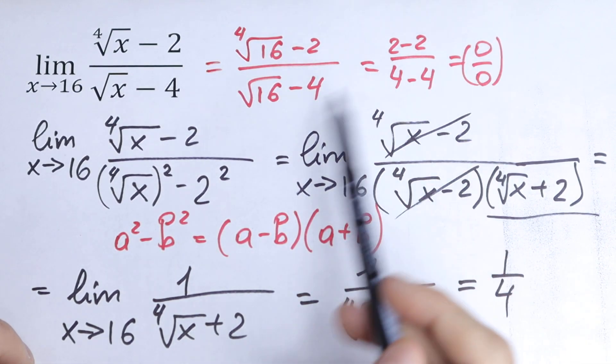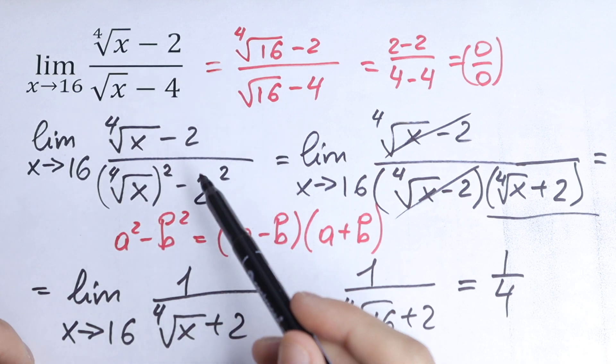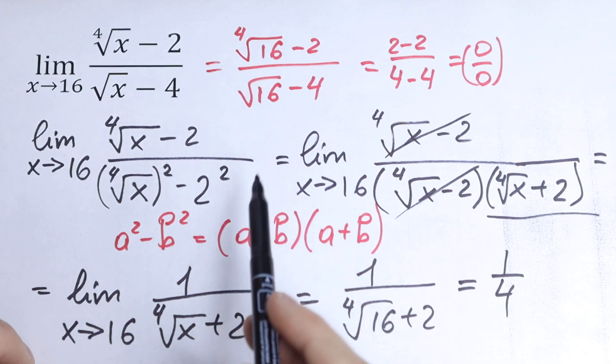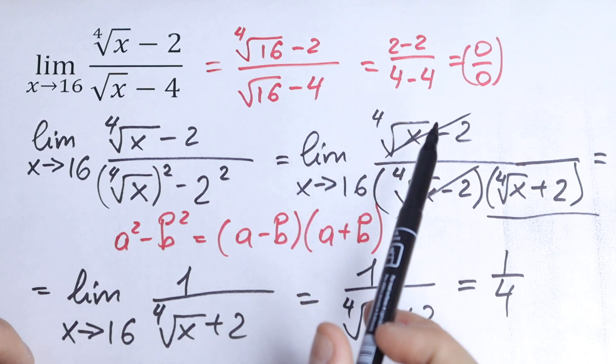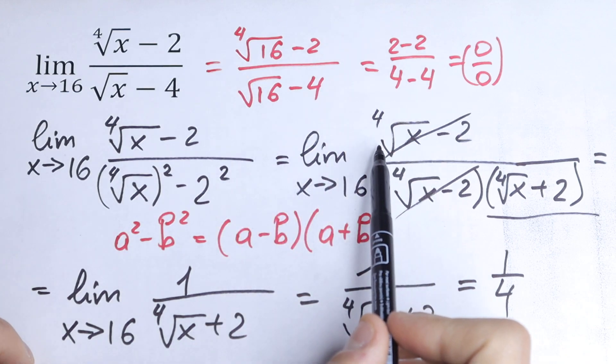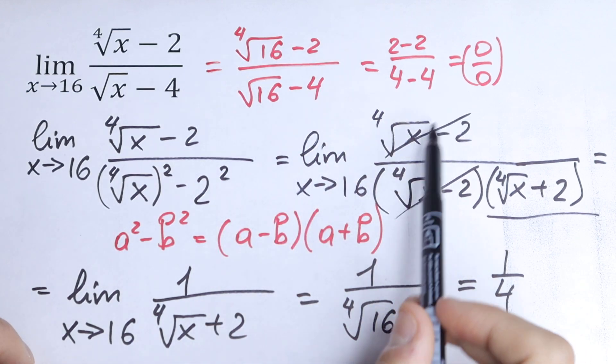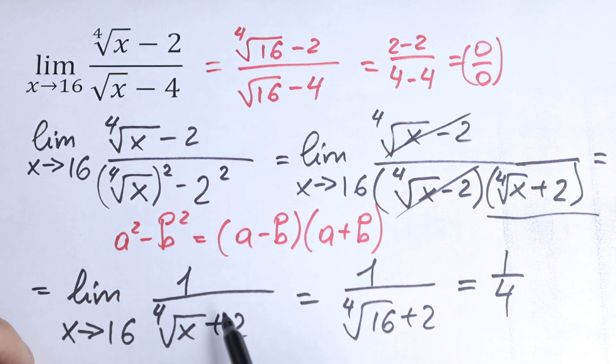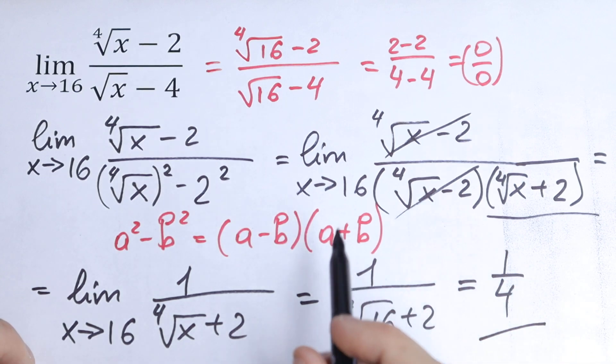First of all, we cancel these expressions that give us an undefined answer. In our case, this expression will be fourth root of x minus 2. We cancel it using this formula, so as a result we have the limit that we can calculate. The answer is 1 over 4.